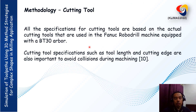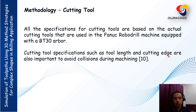We now move further to our cutting tool information, which is among the most important details to note in a CAD/CAM system. All specifications for the cutting tool are based on actual cutting tools used in a FANUC robot drill machine equipped with a BT-30 holder. In high-speed machining, we use BT-30 and BT-40 holders. Cutting tool specifications such as length and cutting edge are also important to avoid collision during machining. During simulation, we can check whether there is a collision or not.